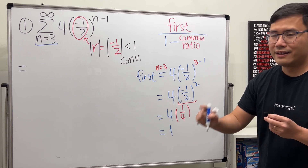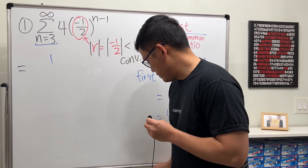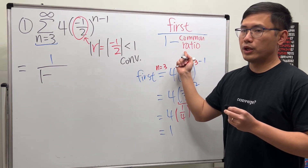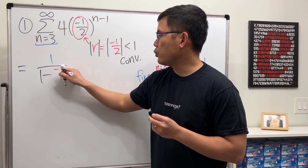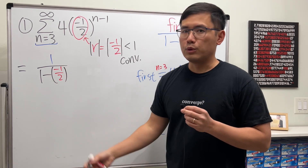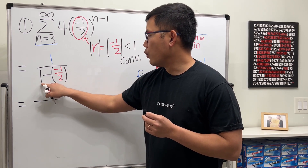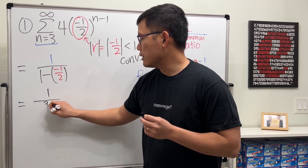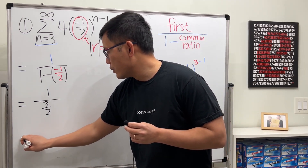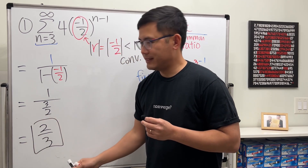So in fact the first term is equal to one. We will have one over one minus the common ratio, which is negative one over two. Working this out, we get one over one plus one half, which is one over three over two. That is just the reciprocal of three over two, so we get two thirds. That's the answer to number one.